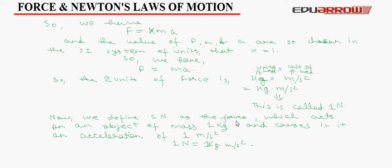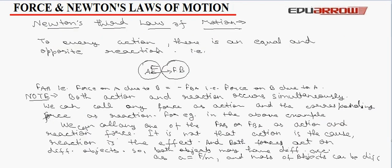Now, let us discuss about Newton's third law of motion. Newton's third law of motion states that to every action there is an equal and opposite reaction. This means, the force exerted by A on B is equal and opposite to the force exerted by B on A. That is, force F_AB, force on A due to B is equal to negative of F_BA. That is, force on B due to A. Now, the important thing to note here is that both action and reaction occur simultaneously.